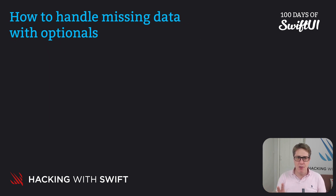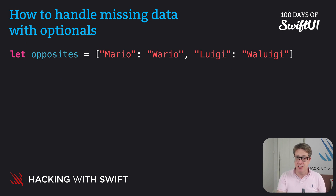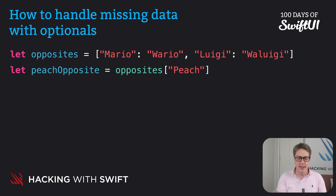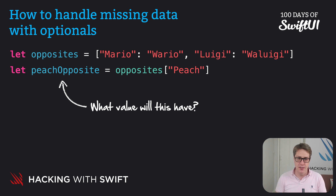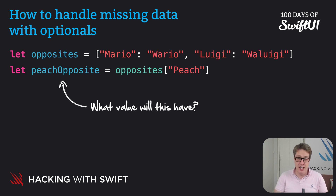You can see optionals in action if you think about this code. Let opposites be a dictionary with key 'mario' value 'wario', key 'luigi' value 'waluigi'. What do we get if we read peach's opposite as opposites['peach']? We've got a String-String dictionary with two keys — mario and luigi — and we attempt to read the value attached to the key 'peach', which does not exist, and we have not provided a default value. So what will peach's opposite be? It wouldn't make sense to get a string back — there is nothing there.